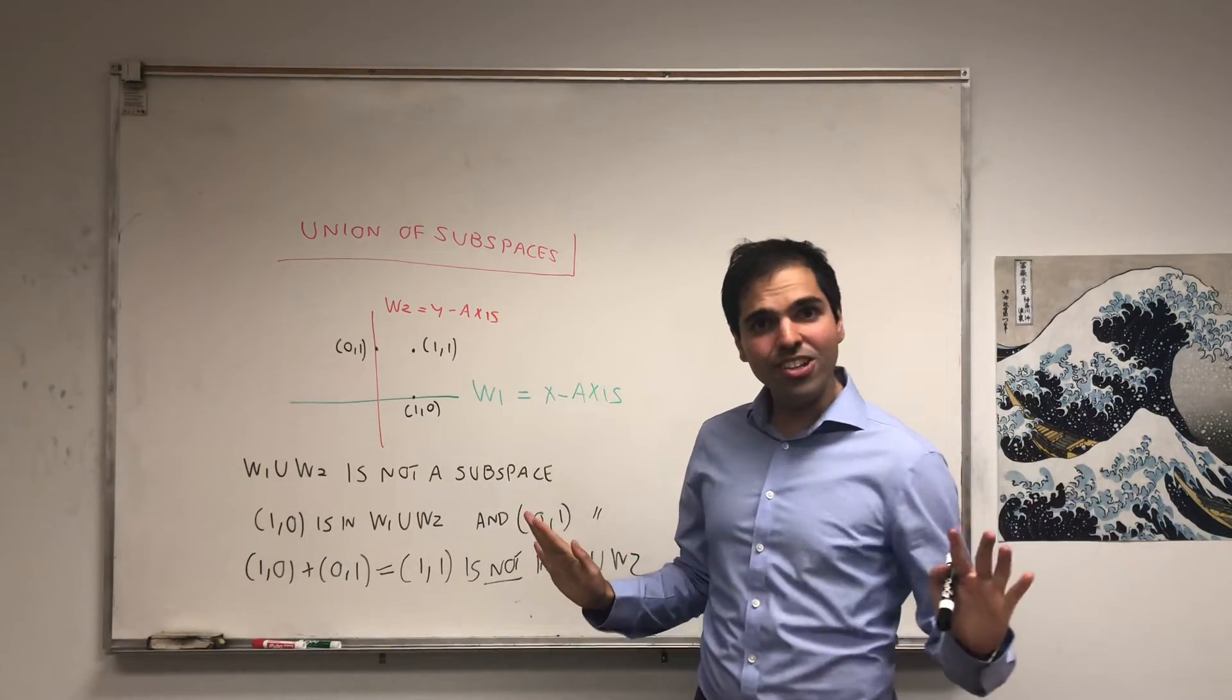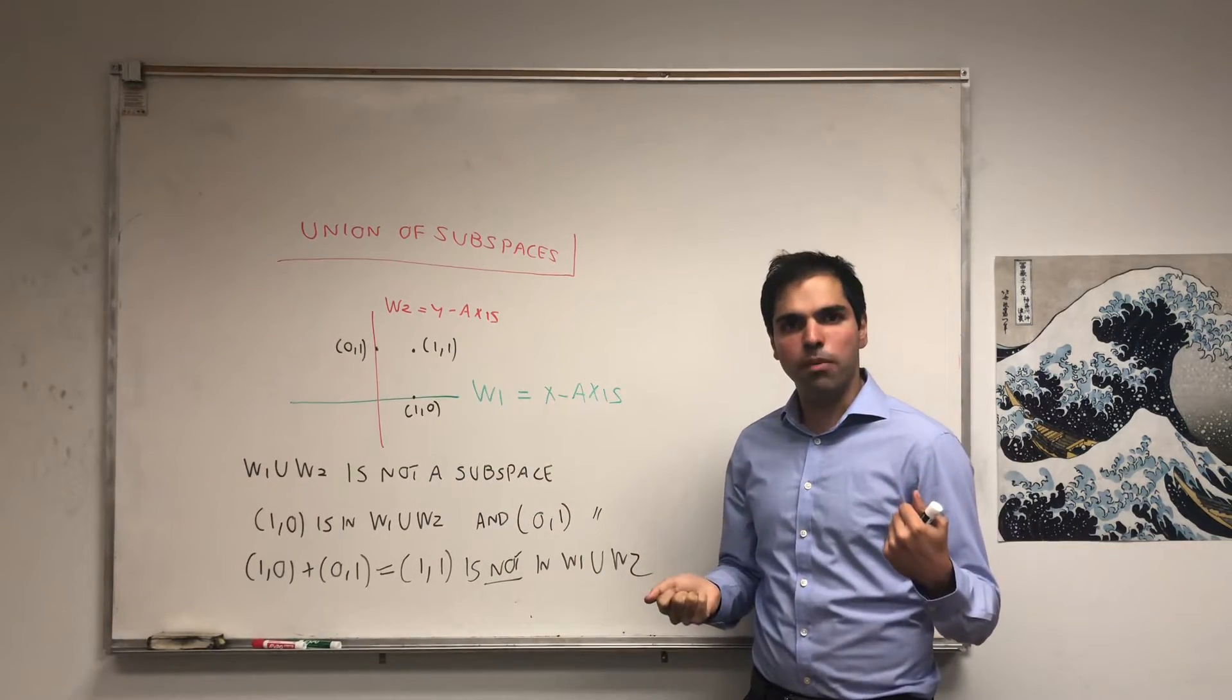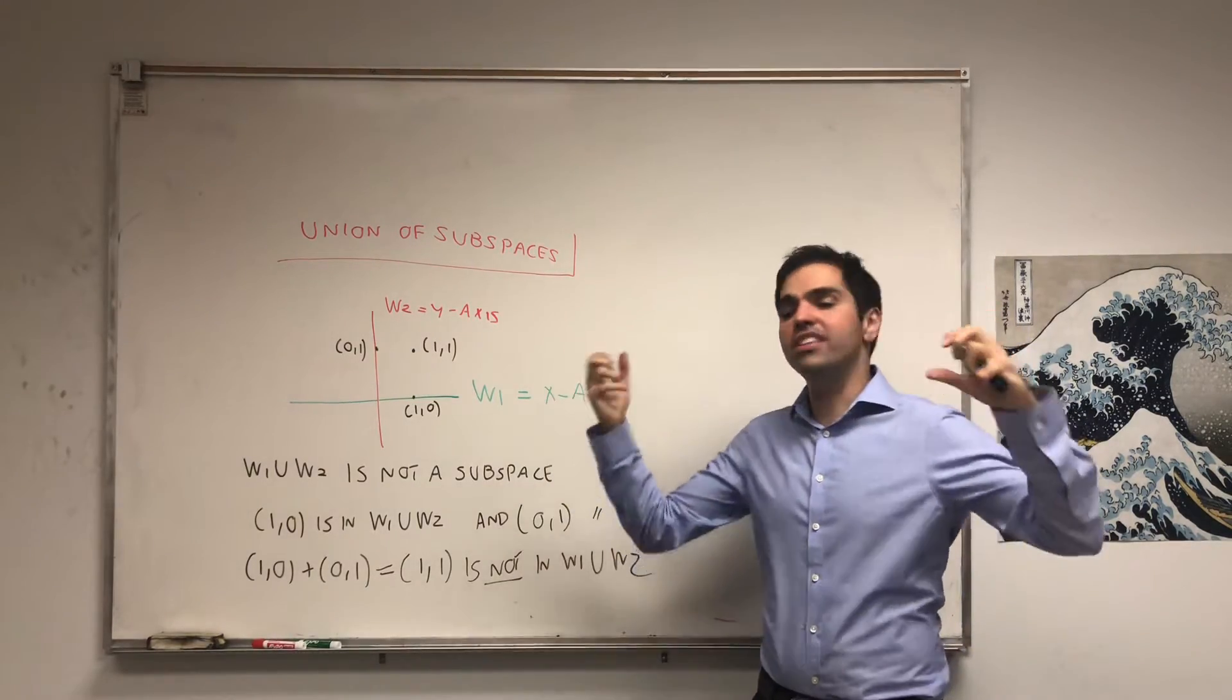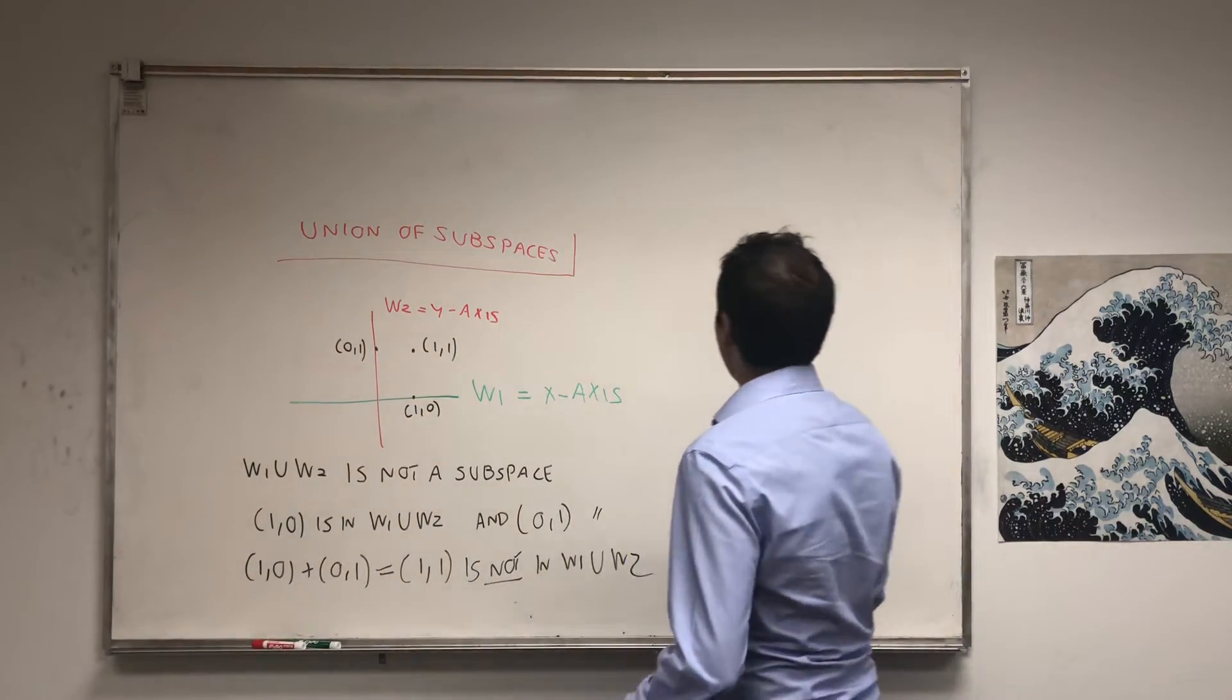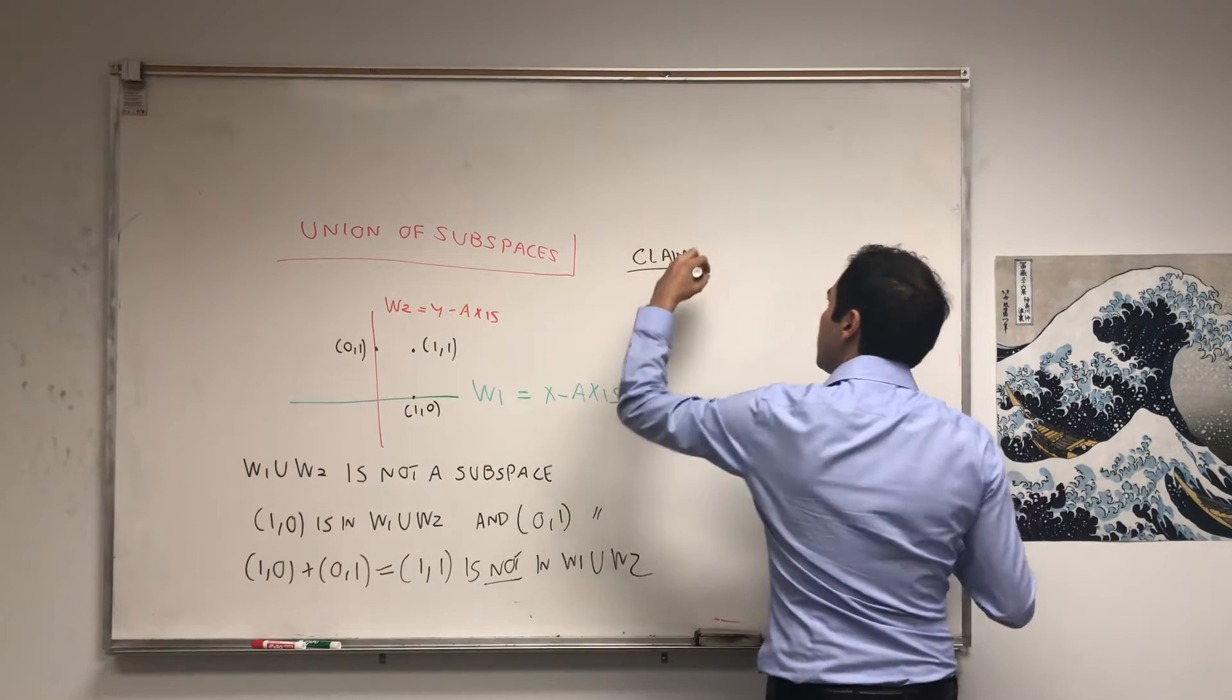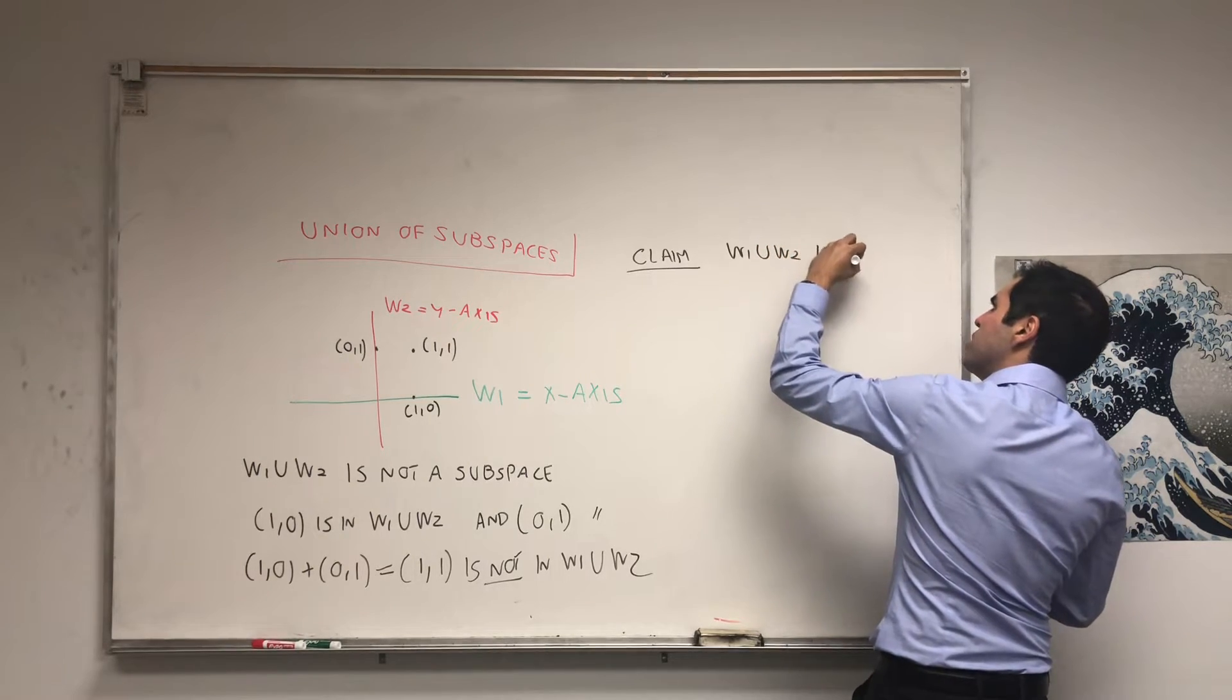And, in fact, what I want to show today is really cool. The only way the union is a subspace is in the trivial case, where one is contained in the other one. And that's a very classical exercise in linear algebra. So let's prove the following claim: W1 union W2 is a subspace if and only if W1 is a subset of W2 or W2 is a subset of W1.